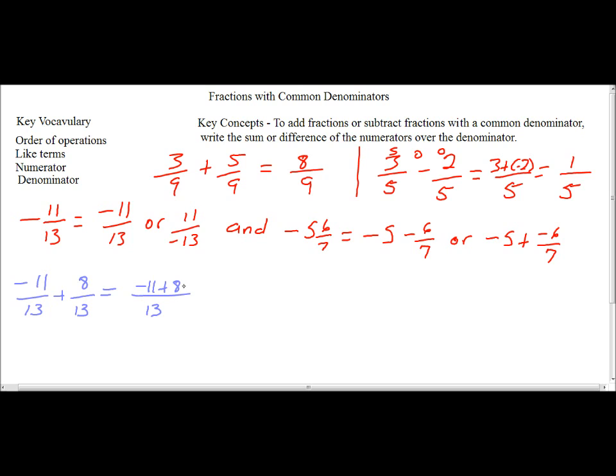So now we apply our rules of integers. So if we do, we see that 8 is our smallest absolute value. And we'll subtract it from a negative 11 or 11, which is our largest absolute value. And we will get 3, and that's going to be 3 over 13. But because that is a negative 11, then our sign for our actual sum will be negative.